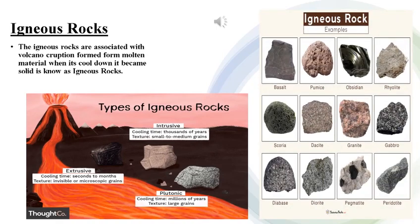Let's discuss the first type: igneous rock. Igneous rocks are associated with volcanic eruptions. They are formed from molten material — when it cools down it becomes solid, which is known as igneous or primary rock. Look at this picture showing the different types of igneous rocks and how igneous rocks are formed.